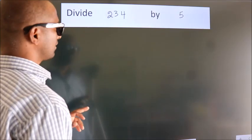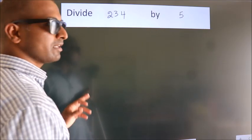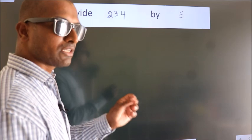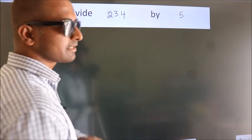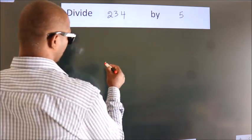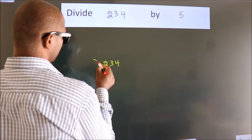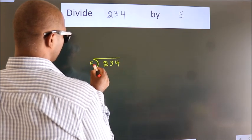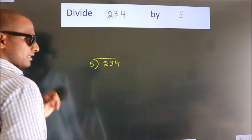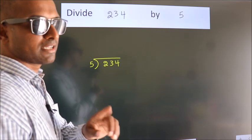Divide 234 by 5. To do this division, we should frame it in this way. 234 here, 5 here. This is your step 1.